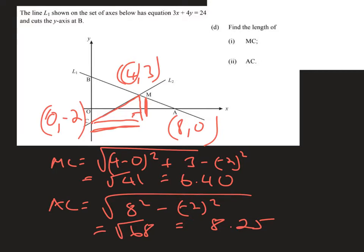Similarly for AC, which is this length here, we can make this our right angled triangle. The base is the x coordinate at A minus x coordinate of C, so 8 minus 0 gives 8 squared. The y coordinate is 0 minus -2, which is plus 2 squared. That's root 68 which is 8.25.